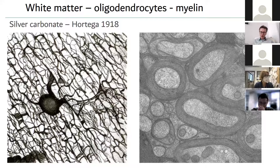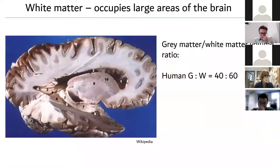Today with electron microscopy we can nicely visualize myelin — you can see its typical multi-layered structure, which is a major component of the white matter. Here you see a sagittal section of a human brain autopsy, and I'm always amazed at how abundant and high-volume the white matter is. White matter is really a dominant feature of higher brains.